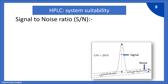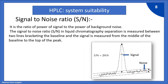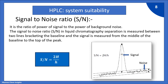Next parameter: signal to noise ratio (S/N). It is the ratio of the power of the signal to the power of background noise. In liquid chromatography, S/N is measured between two lines bracketing the baseline, and the signal is measured from the middle of the baseline to the top of the peak. You can see the figure for that. The formula is: S/N = 2H / h, where H represents the signal and h represents the noise.